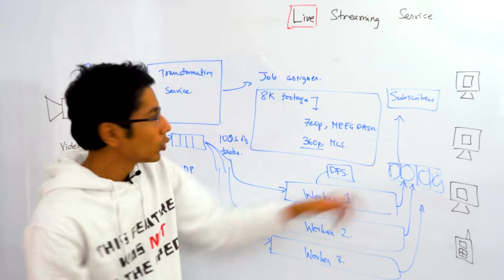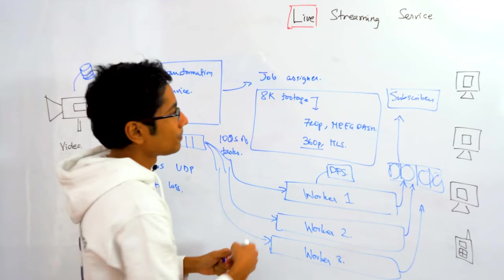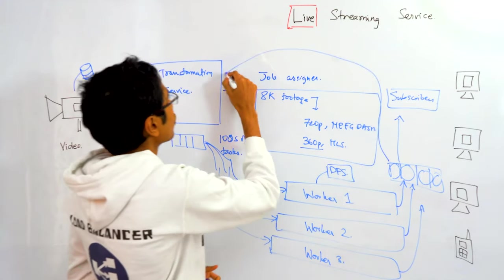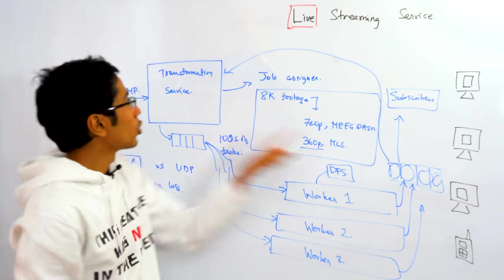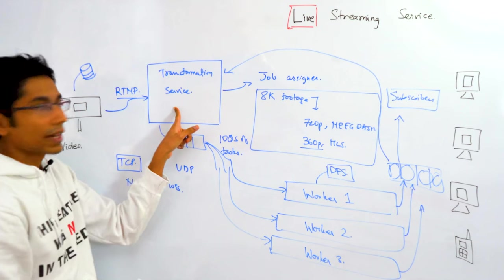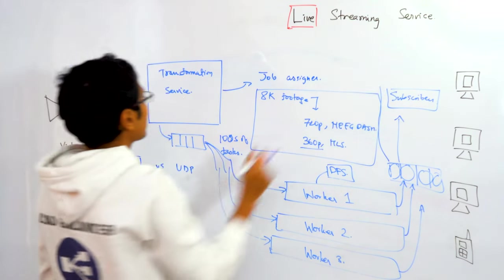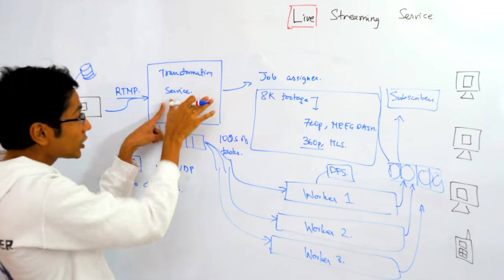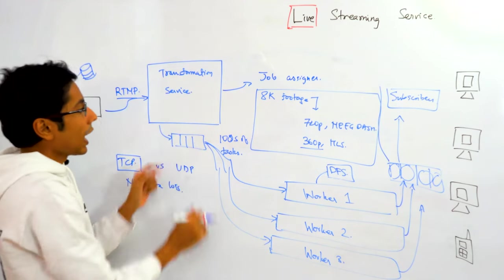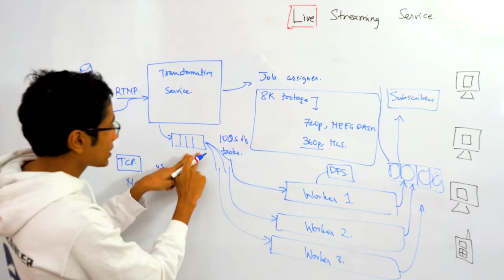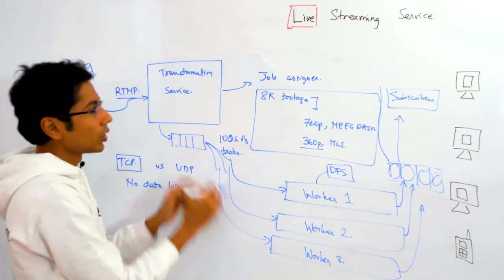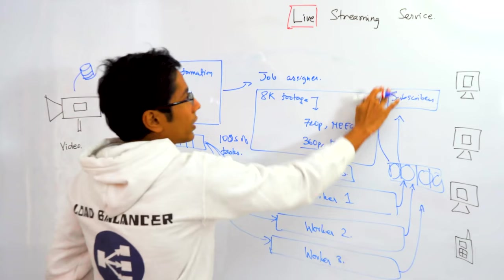One of the subscribers of this queue is going to be the transformation service itself because when you successfully complete a task you're essentially telling the transformation service that hey maybe I can take another thing in the queue. Or you can decouple the transformation service and say that the transformation service can publish tasks at its own pace in this queue and the workers pull tasks at their own pace from this queue. The subscribers to this are independent.